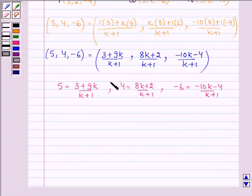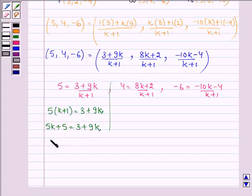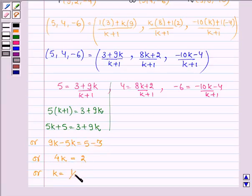With the help of the first one, let us simplify it. We have 5 into k plus 1 equals 3 plus 9k on cross multiplying, which is further equal to 5k plus 5 equals 3 plus 9k. Or 9k minus 5k equals 5 minus 3, or we have 4k equals 2, or k equals 1 upon 2.